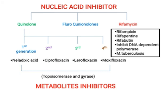Then we have metabolite synthesis inhibitors. Bacteria have essential metabolites, and these antibiotics stop the synthesis of essential metabolites. We have sulfur drugs — sulfa drugs target folic acid. Their spectrum covers gram-positive and gram-negative bacteria. We also have sulfonamides as an example. These are two important antibiotics which specifically inhibit metabolite synthesis in bacteria.